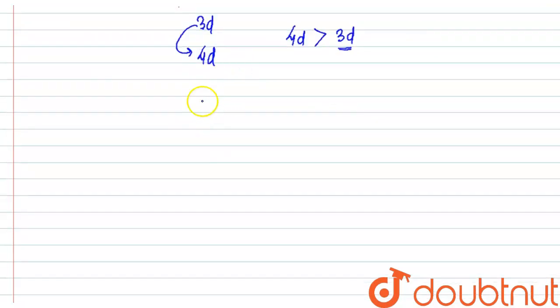so third series is 5d series. So except the first metal that is lanthanum, all of them have nearly the same radii as that of second transition series. So I can say that